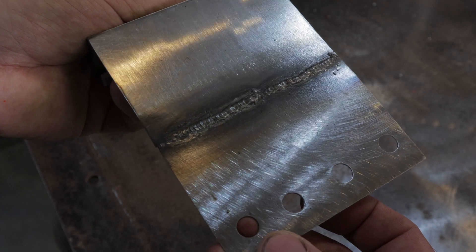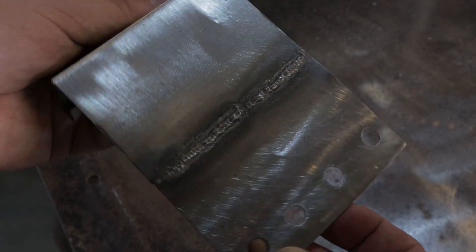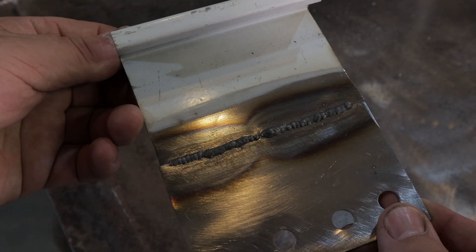I didn't even upload the spot weld. Flux core is definitely not suited to spot weld sheet metal this thin. It was painful.